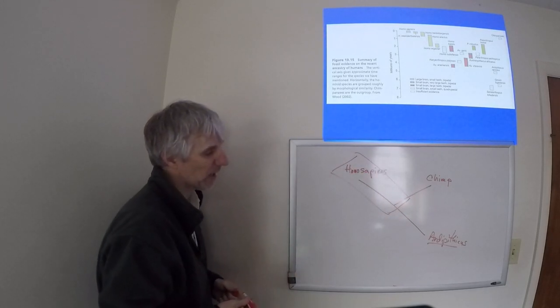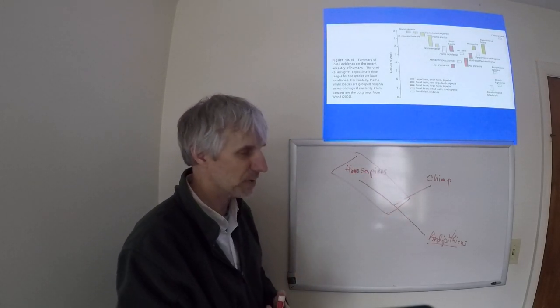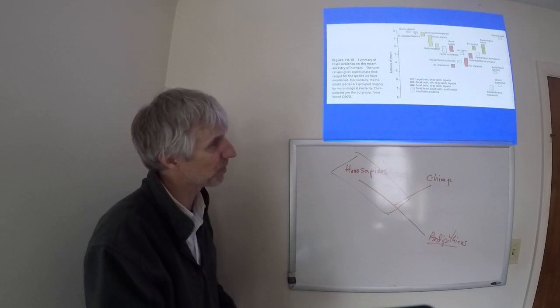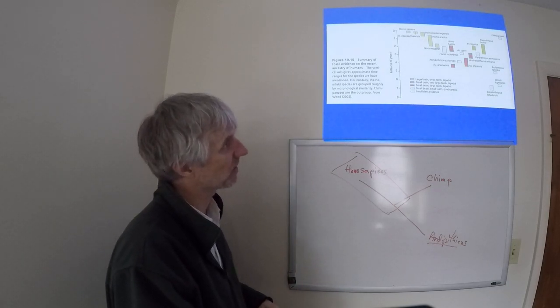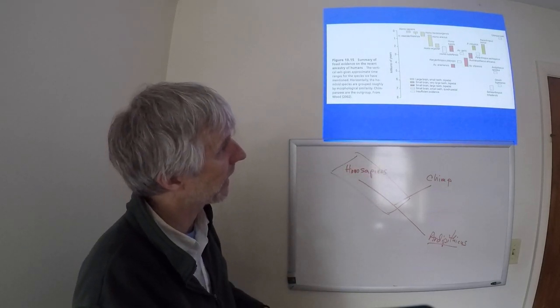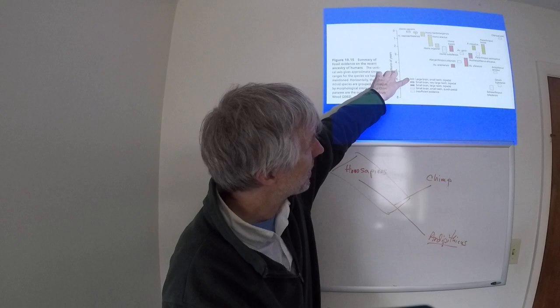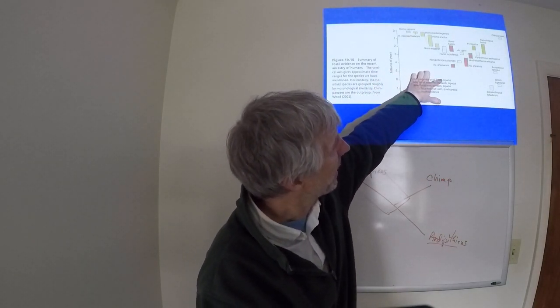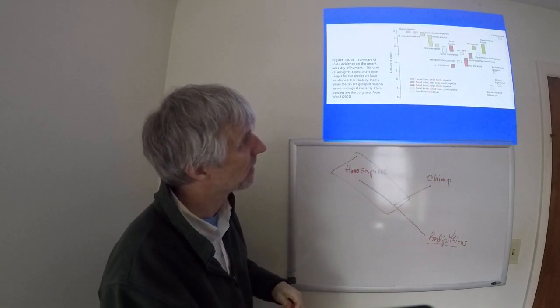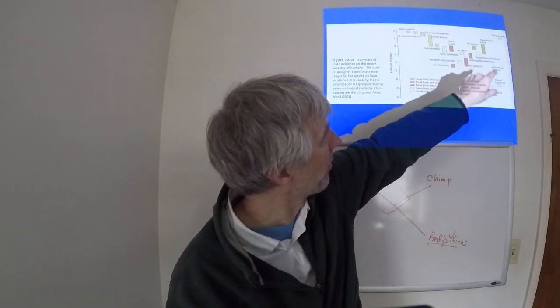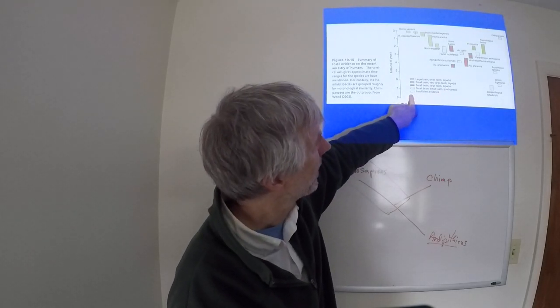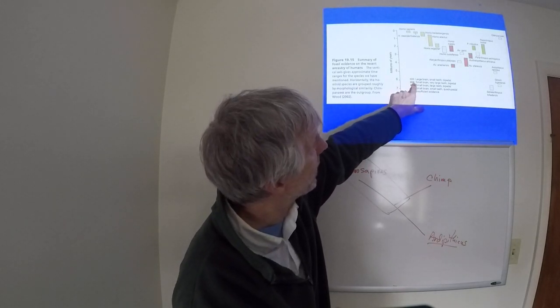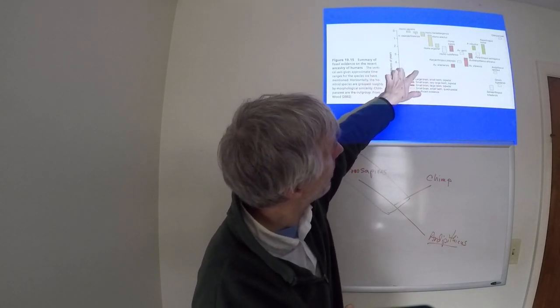So my question about what happens after the chimps and the hominids split, and which species become which other species through this kind of speciation process, this is what we're looking at. The traits here: large versus small brain, small versus large teeth, and two versus four feet. The chimps are the four feet, quadrupeds.